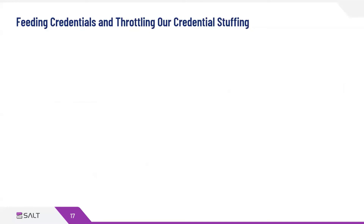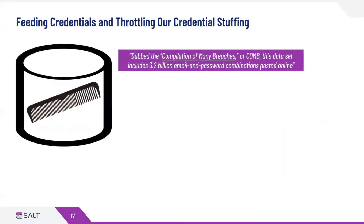You might be asking: where do attackers get credentials to perform credential stuffing? There's been no shortage of breaches. There's the Compilation of Many Breaches, or COMB — a dataset of over 3.2 billion email and password combinations. Not all of it may be useful for a given target API, but it is there and very useful for credential stuffing attacks.